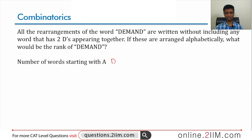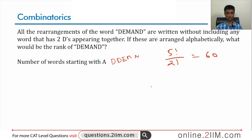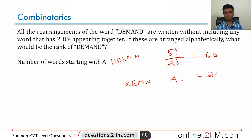Words starting with A: after A we rearrange D, D, E, M, N. The number of ways to rearrange D, D, E, M, N is five factorial by two factorial, which is 60. Within these, the words where the two D's appear together — put the two D's in a box (X), rearranging X, E, M, N — that's four factorial, or 24. So 60 minus 24 equals 36 different words starting with A that satisfy all conditions.